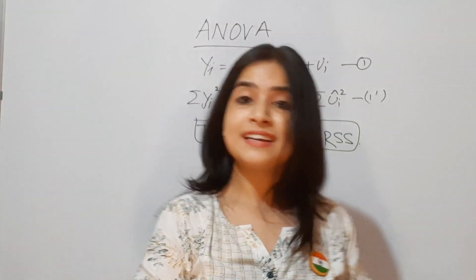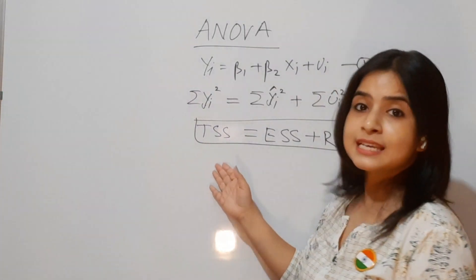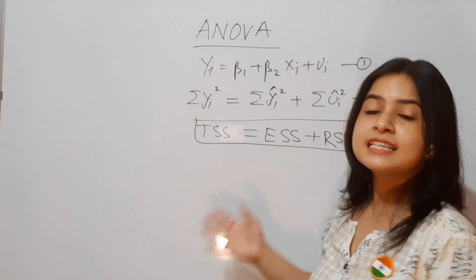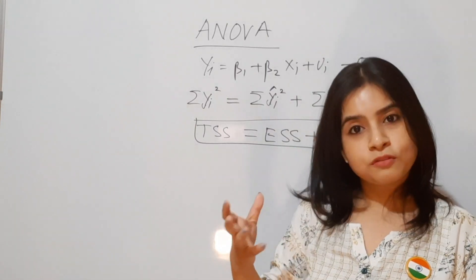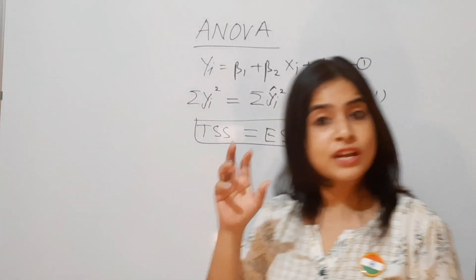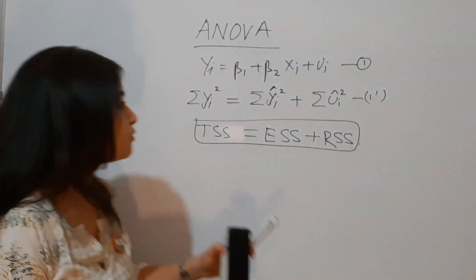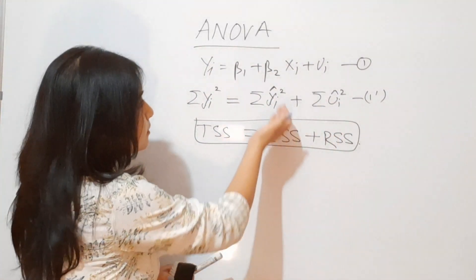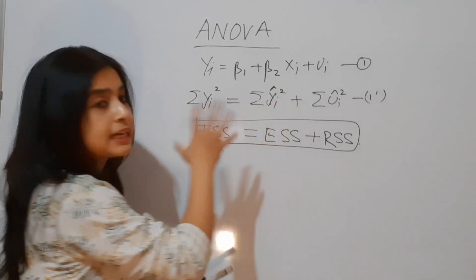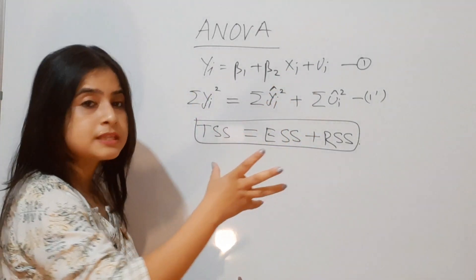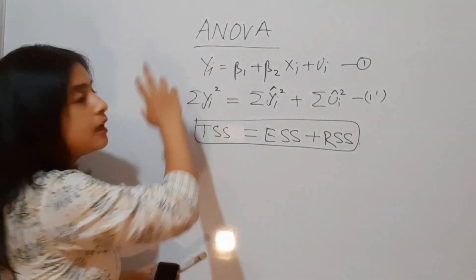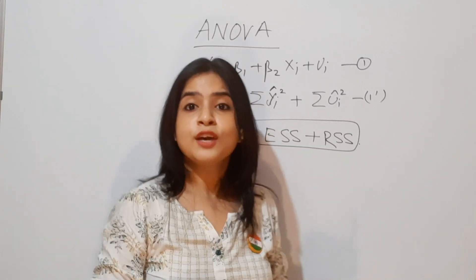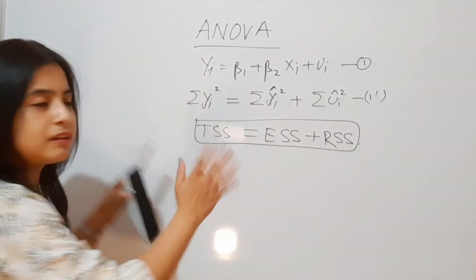TSS is the Total Sum of Squares. ESS is the Estimated Sum of Squares. And RSS is the Residual Sum of Squares, which comes from the ûi part — the residual. RSS involves the explanatory variables, ESS comes from the ŷi part, and TSS comes from the yi part. So this is the fundamental relation we are working with.